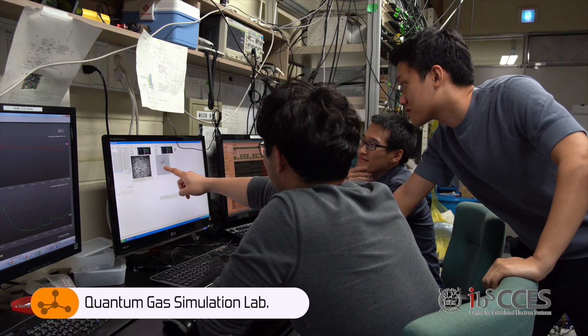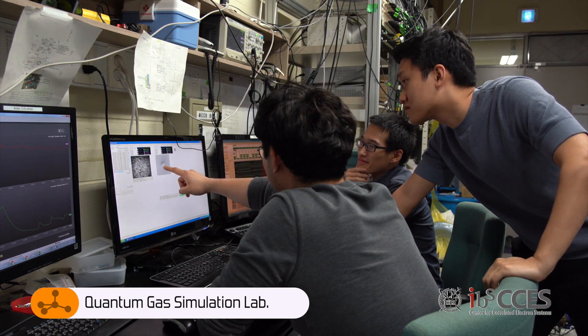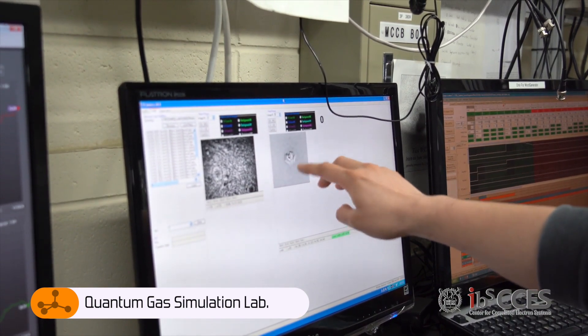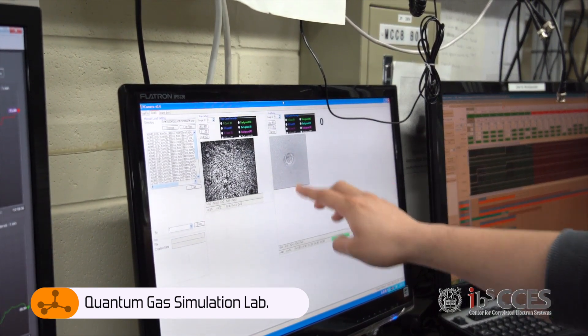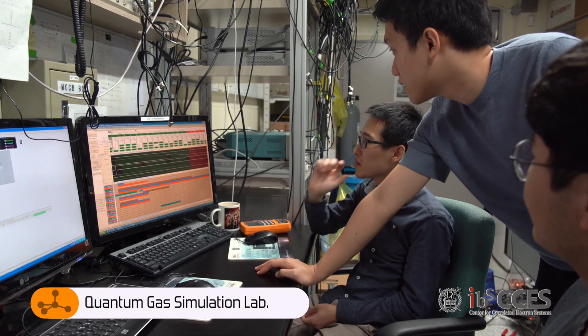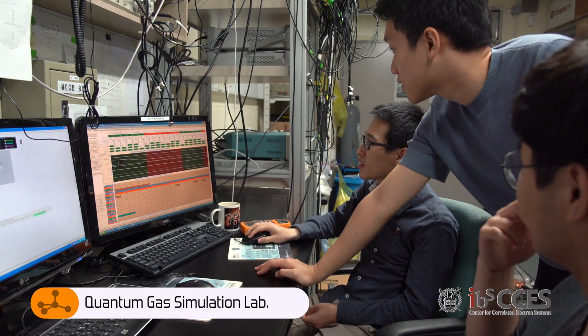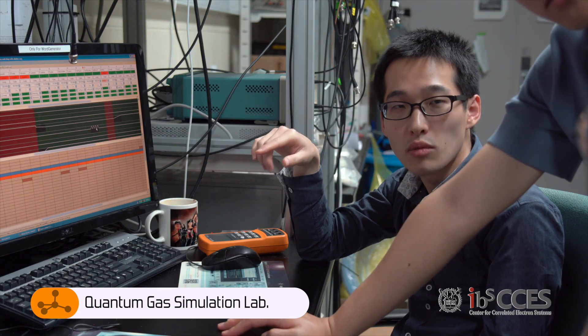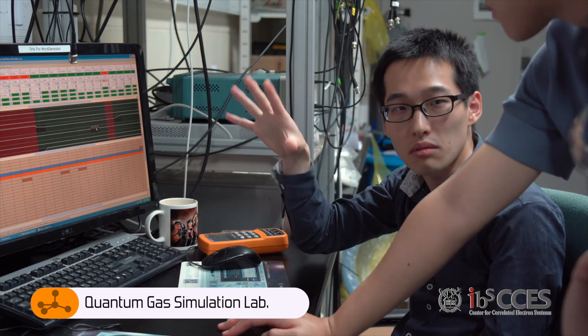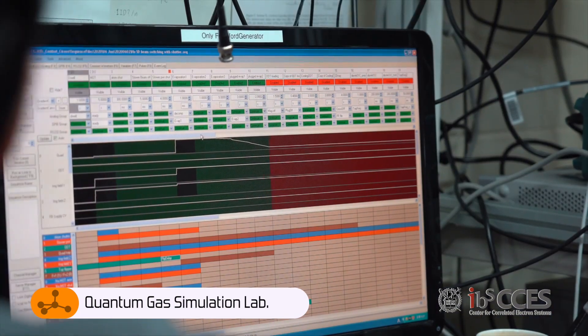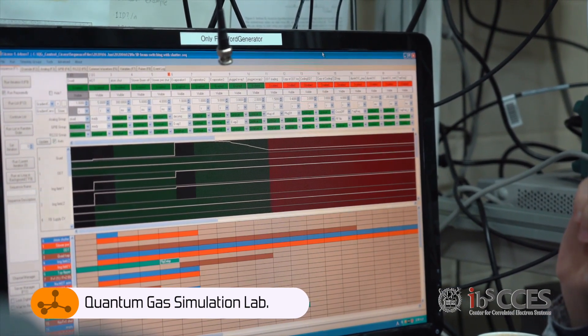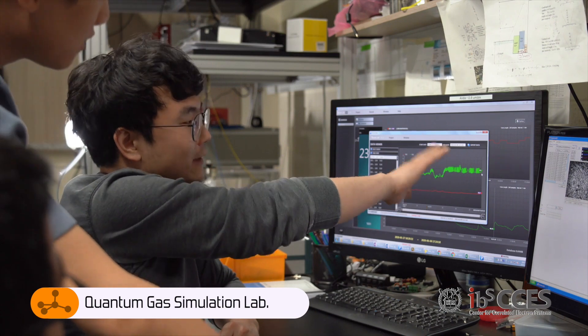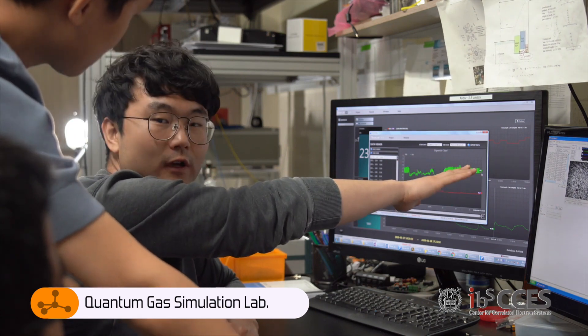Ultra-cold quantum gases can be used to simulate Hamiltonians of strongly correlated systems in a controlled manner, without defects typically present in real solid systems. When bosonic atoms are cold, they form a Bose-Einstein condensate, whereas Fermi atoms become degenerate Fermi gas. Depending on the species of atoms, different kinds of Hamiltonians can be studied because each atom's properties like mass, nuclear spin, and chemical properties can affect the Hamiltonians. In our team, we study sodium, lithium, and ytterbium quantum gases.